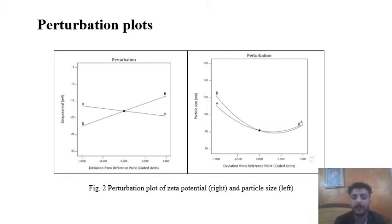In the perturbation plot of particle size, B is more curved than A, means factor B is more dominant than factor A. Whenever there is an increase in surfactant to co-surfactant ratio, particle size is decreasing.